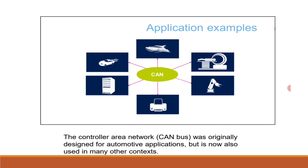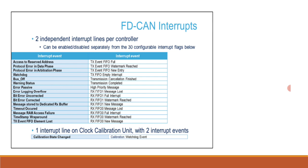Let's move on to interrupts. There are two independent interrupt lines per controller, enabled or separated from 30 configurable flags. The FD CAN controller peripheral provides two independent interrupts. The CAN subsystem provides four independent interrupt lines for the controllers.